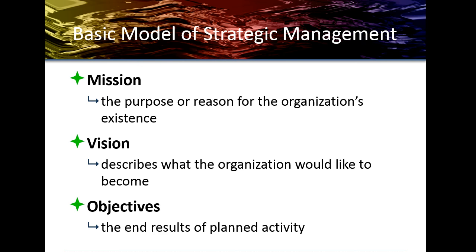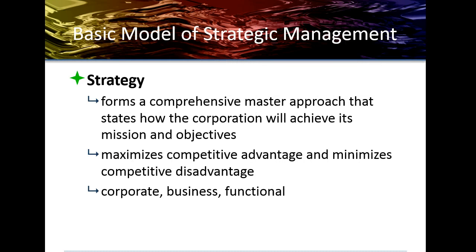In this plan, we need to have a mission — why is the company here, what are we here to do? The vision is what do we want to become and where are we going? And the objectives are what we want to accomplish as part of this mission and vision. All of that needs to be in the strategic plan, as a master list of how we're going to achieve our mission and objectives.